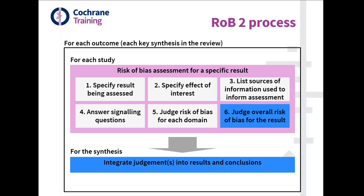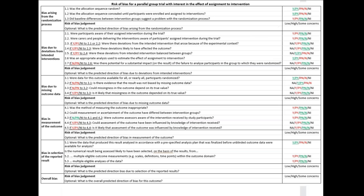An important aspect to mention is that the integrated judgment across studies will then feed into one of the factors in GRADE — the risk of bias component of GRADE assessment of certainty of evidence. This is a snapshot of the entire tool, showing the five domains with signaling questions and domain-level judgments, and once all questions are answered we make the overall risk of bias judgment.